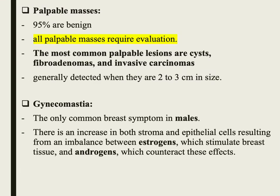Another clinical presentation is palpable masses — masses detectable by physical examination. About 95% of these are benign, but all palpable masses require evaluation and workup. The most common causes are cysts, fibroadenoma, and invasive carcinoma. Palpable masses are generally detected when they are about 2 to 3 cm in size; lesions smaller than 2 cm are difficult to detect through physical examination.